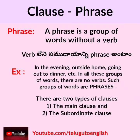Phrase. A phrase is a group of words without a verb. For example: 'in the evening,' 'outside home,' 'going out to dinner,' etc. In all these groups of words, there are no verbs. Such groups of words are phrases.